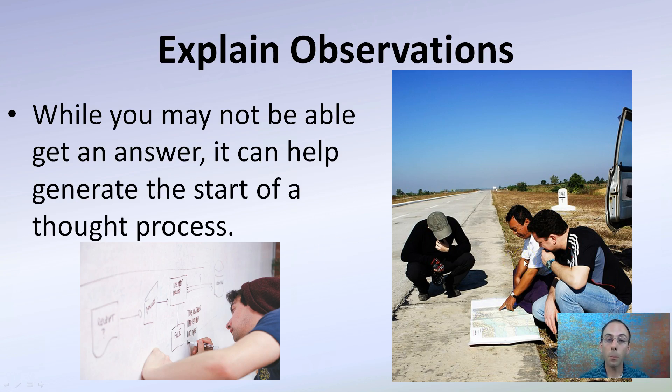Looking at explaining observations, while you may not always be able to get to an answer, it can help generate or start the thought process. So developing a sequence of things, seeing how things may connect, trying to problem solve, explain what you may see, bringing maybe others in initially for ideas are all good ways to try to develop that initial explanation of your observations.